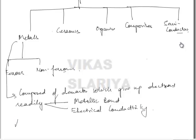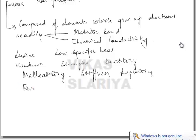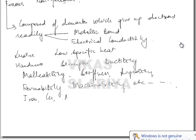Metals have properties like lustre, hardness, low specific heat, strength, ductility, malleability, stiffness, rigidity, formability, machinability, etc. Major examples you know very well: iron, copper, aluminium, zinc — they all are materials.